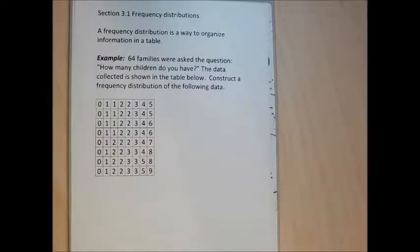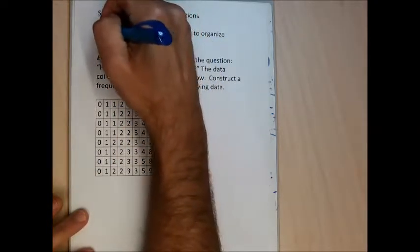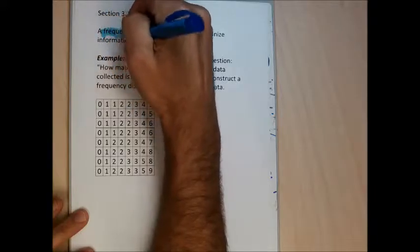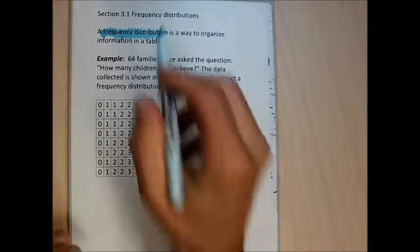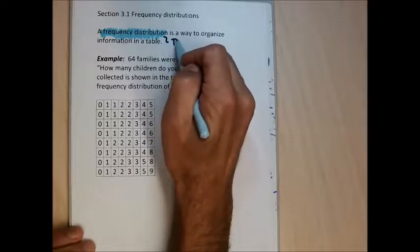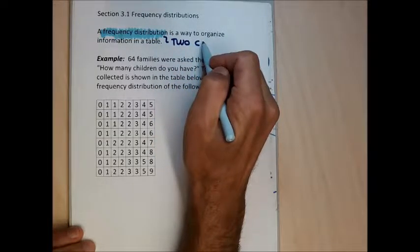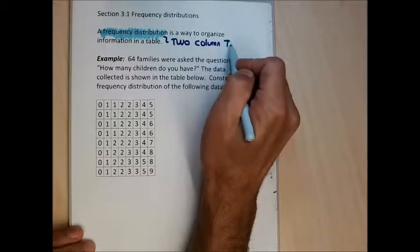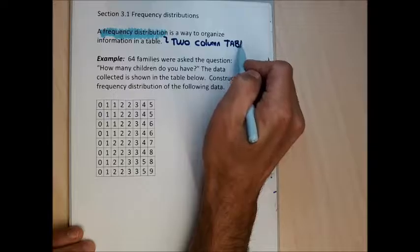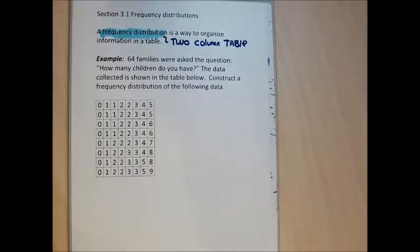The first example I'm going to do is just creating something called a frequency distribution. A frequency distribution is just a two-column table to organize data. We're going to be given data and organize it in that two-column table.